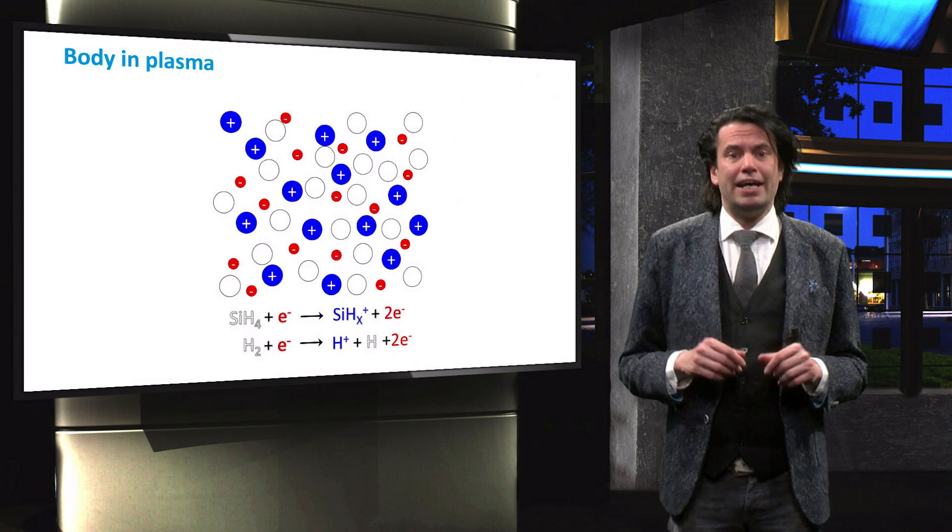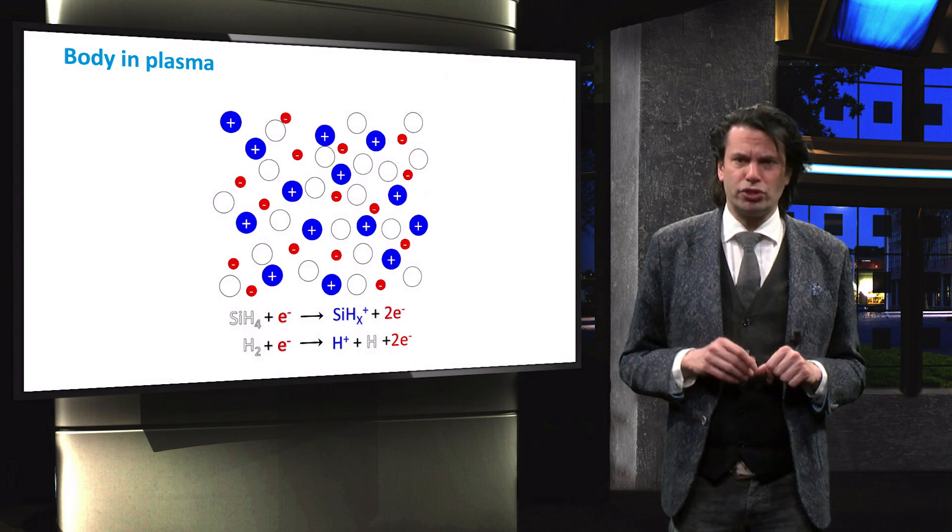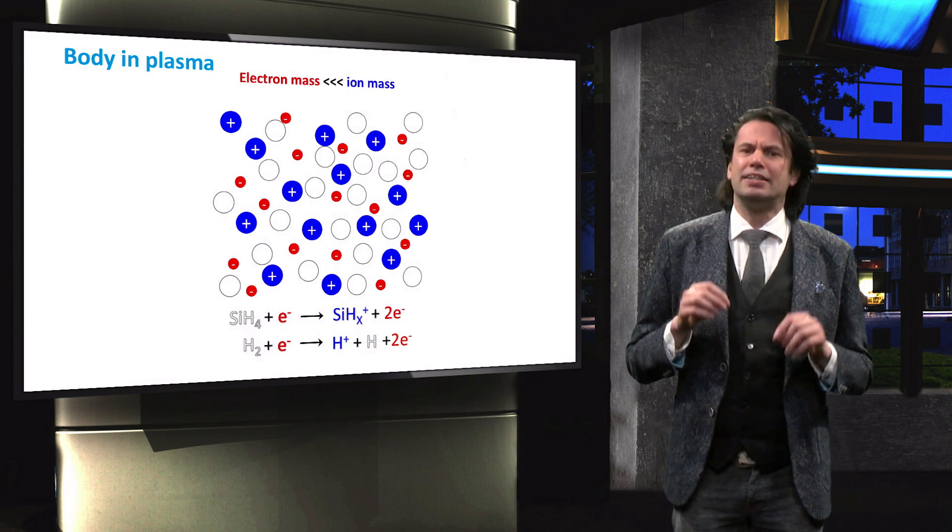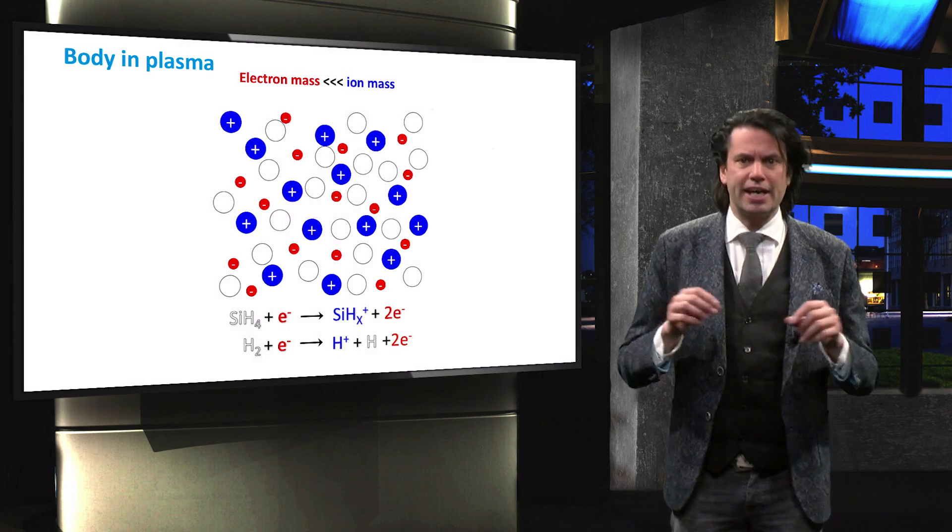The electrons in the plasma, indicated by the red circles, are much lighter than the ions indicated by the blue circles. This is rather important for a couple of reasons. First, because of their tiny mass with respect to the ions and other particles, collisions between the electrons and particles are elastic, so without the transfer of kinetic energy.